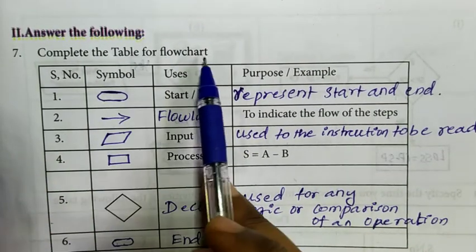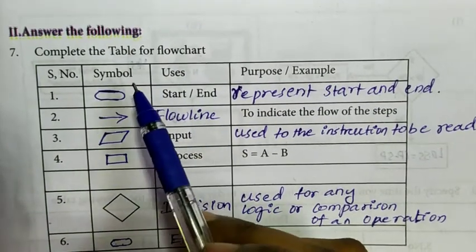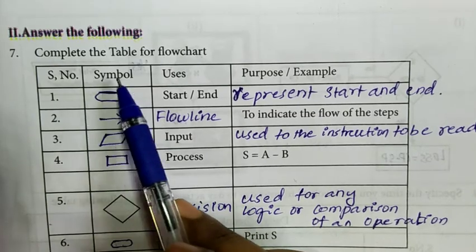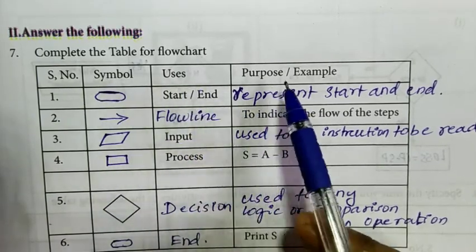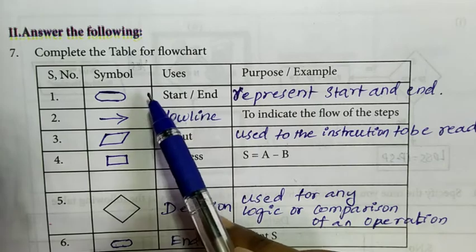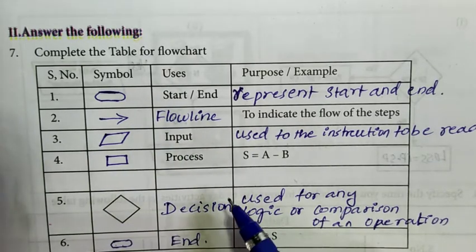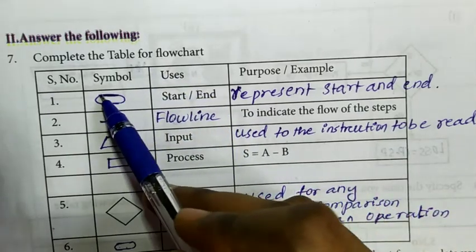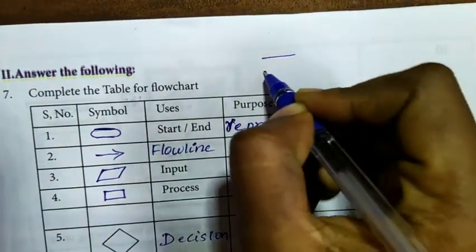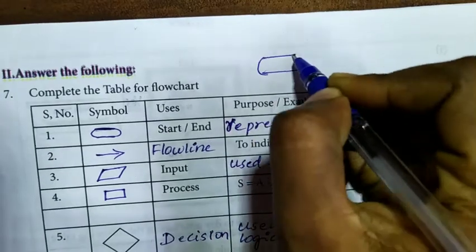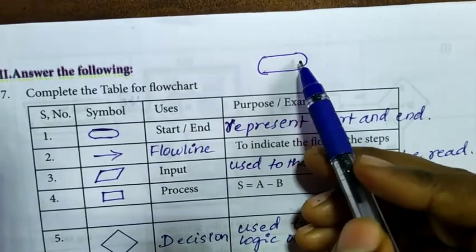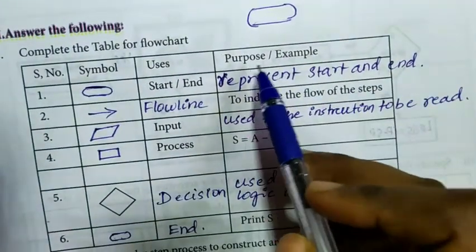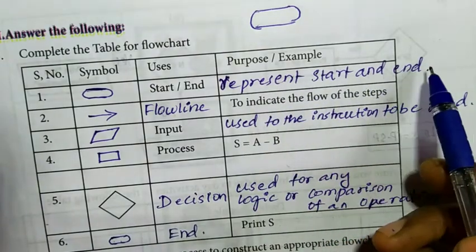Seventh question: complete the table for flowchart. Table is symbol, uses, purpose. This first purpose is represent start and end.